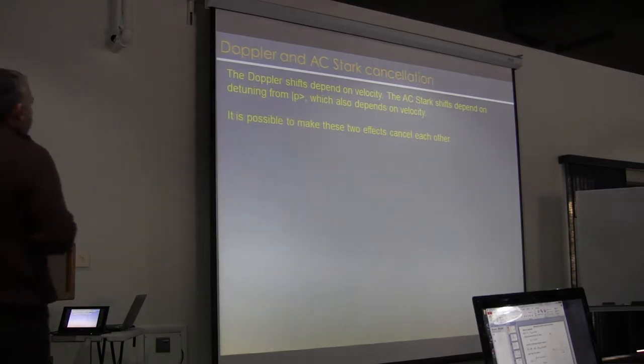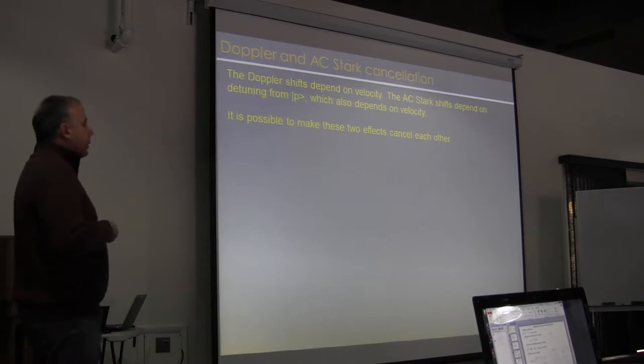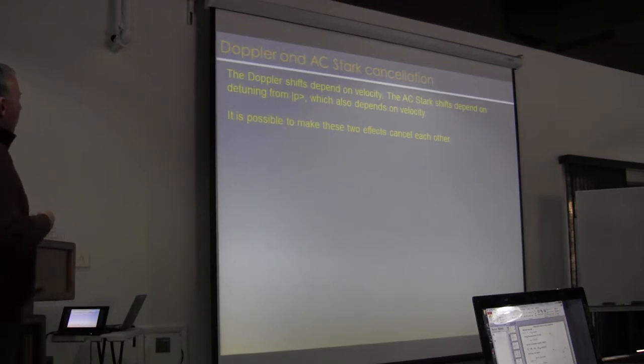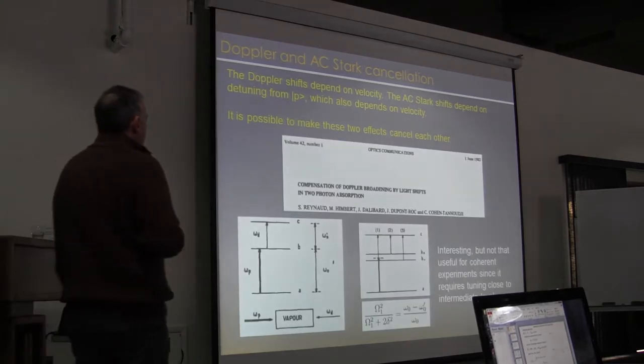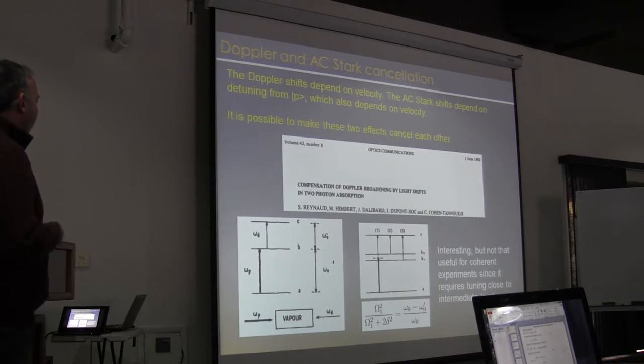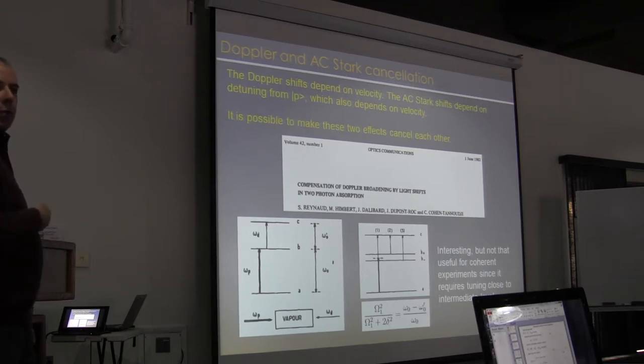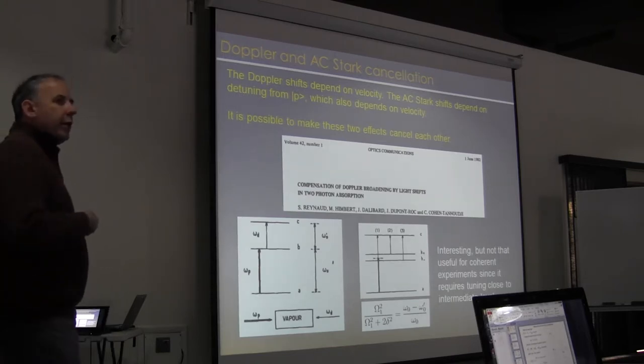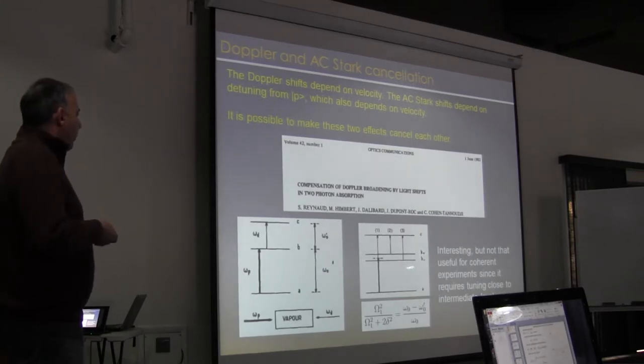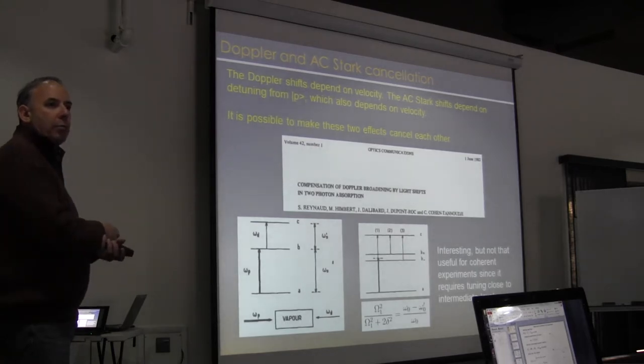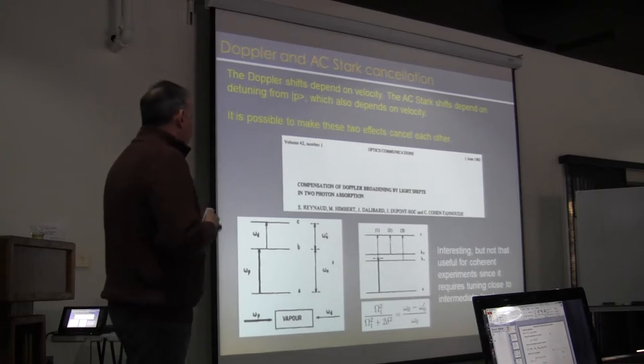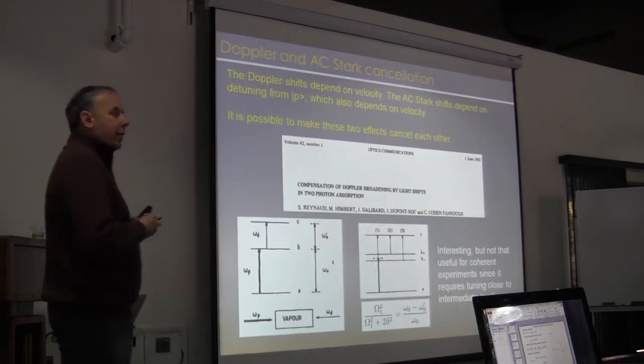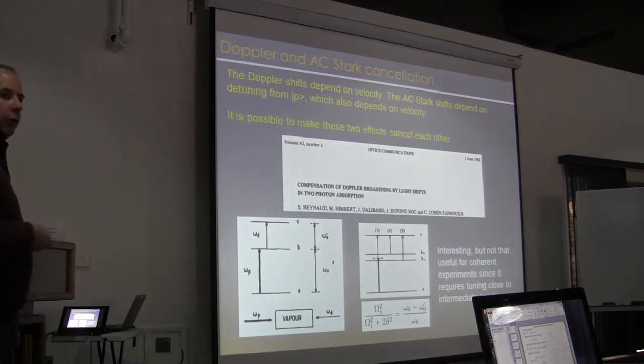Actually, it's maybe worth knowing that you can, in principle, cancel both the Doppler and the AC Stark shifts together using a near resonant technique. And that's because the Doppler shifts depend on velocity, and the AC Stark shifts depend on detuning from the intermediate level, which therefore also depends on velocity. So you can actually cancel both at once. This was pointed out by the Cohen-Tannoudji group quite a long time ago, and they demonstrated this in a vapor cell, that by tuning near an intermediate resonant level, you could simultaneously cancel AC Stark and Doppler broadening. That's interesting, but it turns out not that useful for these kind of quantum gate experiments, because it requires tuning in very close to this intermediate level. Doppler shifts, again, for cold atoms are not large, and to minimize this spontaneous emission, we want to be gigahertz detuned from this intermediate level. So it turns out, again, a little interesting, not all that useful for quantum gate experiments.